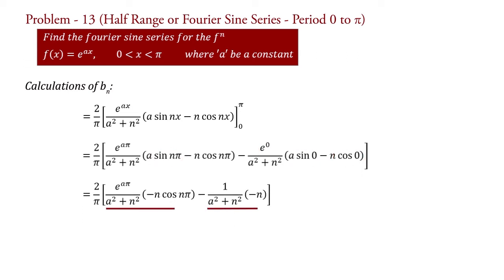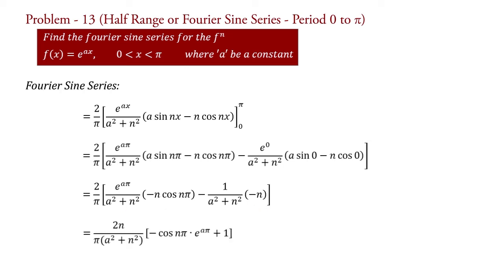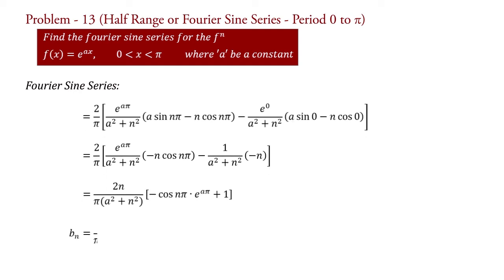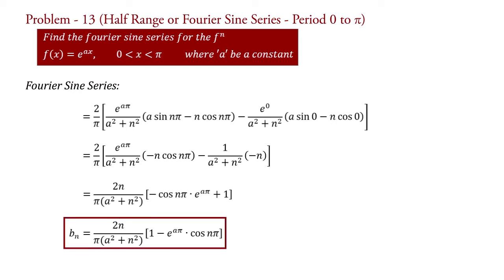Take n/(a² + n²) common in both terms and factor it outside. Therefore, bn = (2n/π) · 1/(a² + n²) · [−cos(nπ) · e^(aπ) + 1], which equals (2n/π) · 1/(a² + n²) · [1 − e^(aπ) cos(nπ)]. This is the value of bn.